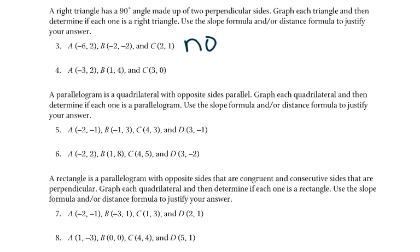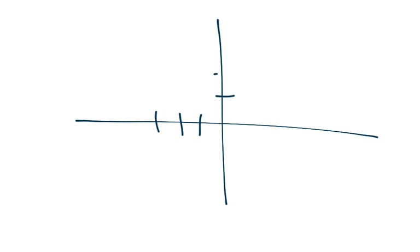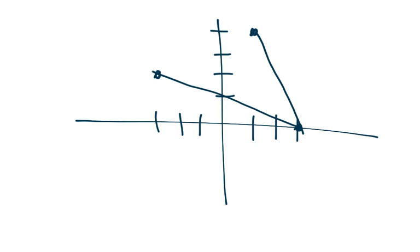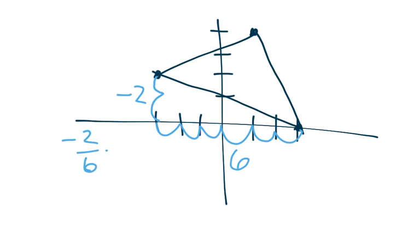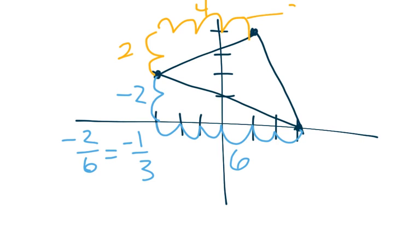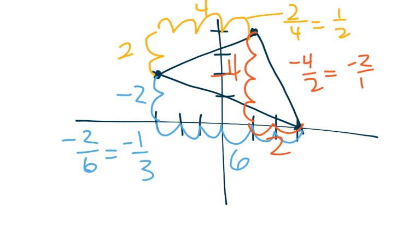For number 3, the answer is no. For number 4, we plot the points: negative 3, 2; then 1, 4; and 3, 0. Finding slopes: the first side goes down 2, right 6, giving negative 2 over 6, which reduces to negative 1/3. The second side goes up 2, right 4, giving 2 over 4, which is 1/2. The third side goes down 4, right 2, giving negative 4 over 2, which reduces to negative 2 over 1. The slopes 1/2 and negative 2 over 1 are opposite reciprocals, meaning that is a 90-degree angle — so yes, this is a right triangle.